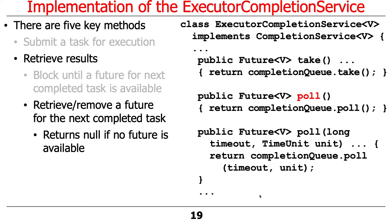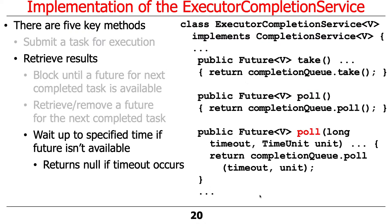Poll does the same thing but just checks to see if there's a result. If there is one, you get it; if not, it returns null without blocking. Timed poll waits up to a certain amount of time, and if something is available by that point it's returned; otherwise, null is returned.